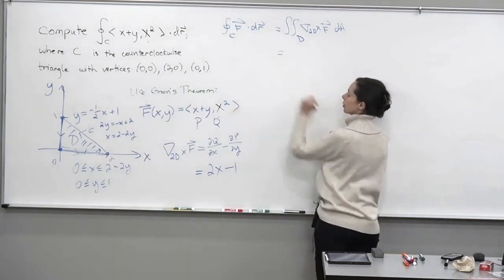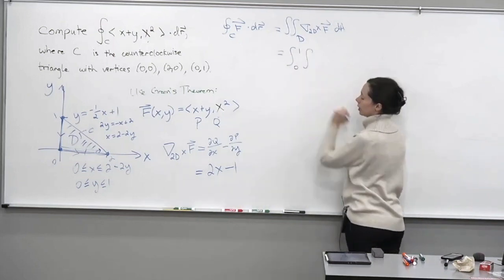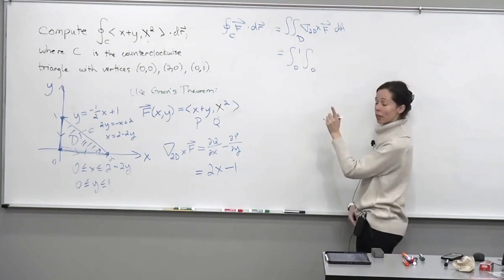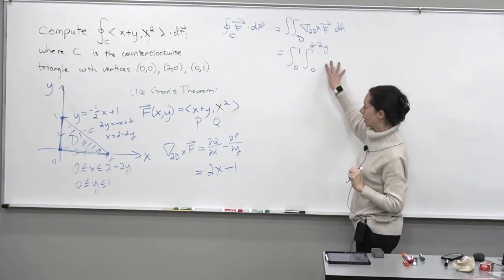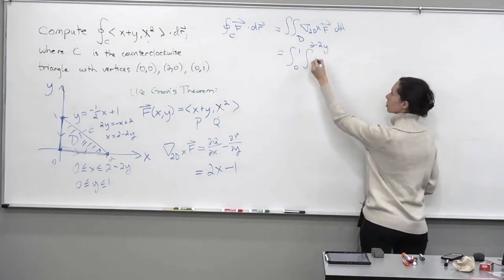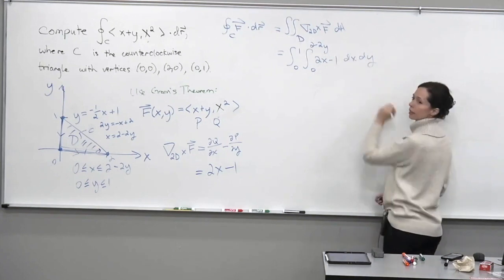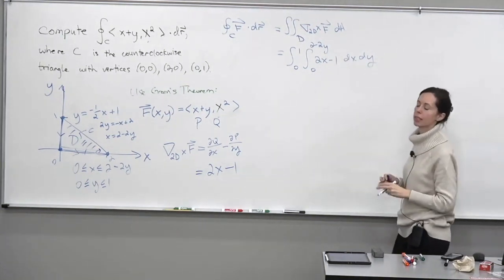Okay, so for the outer integral, y goes from 0 to 1. x goes from 0 to 2 minus 2y. And then the integrand is going to be 2x minus y dx dy. At that point, the heart of the problem, which was to set it up really with Green's theorem, is done.